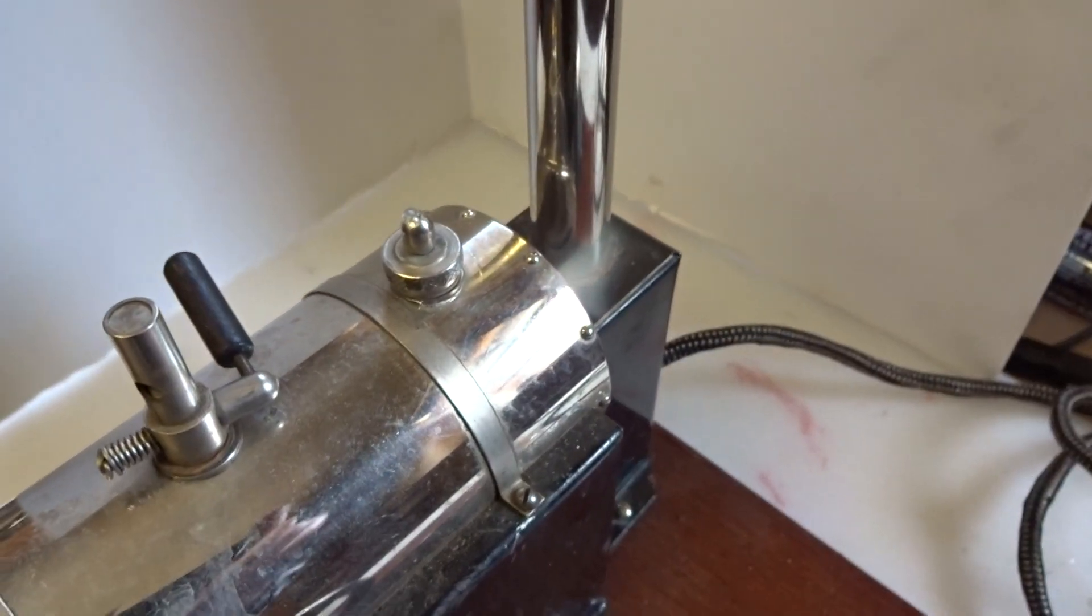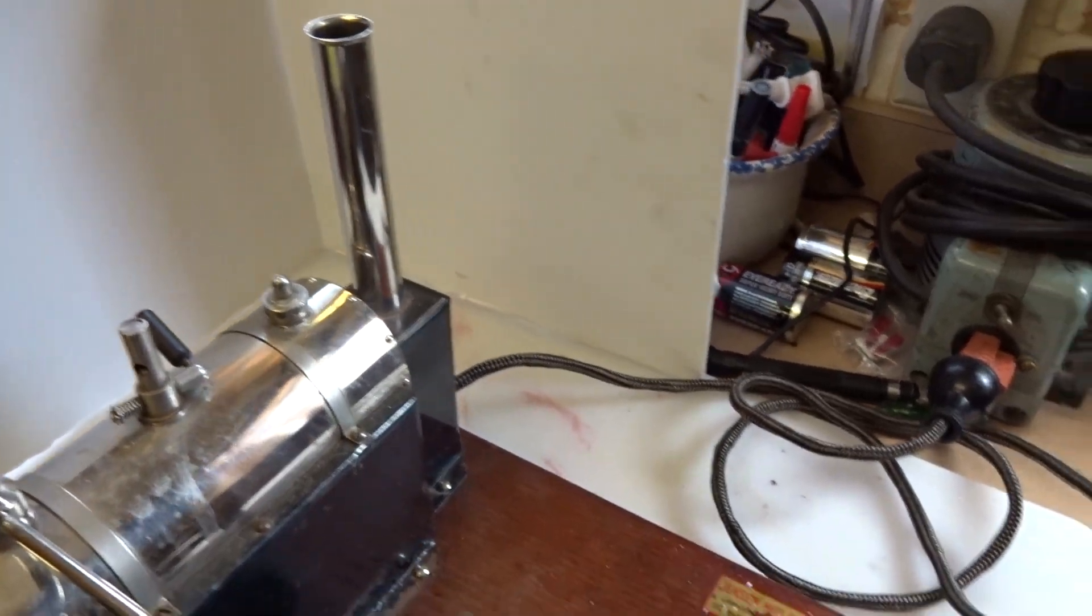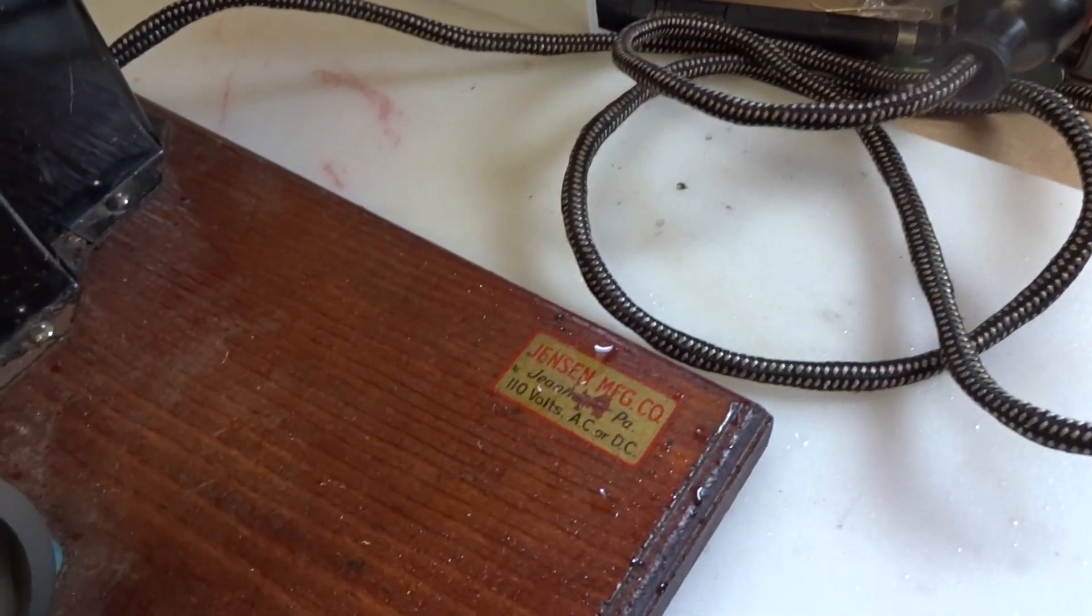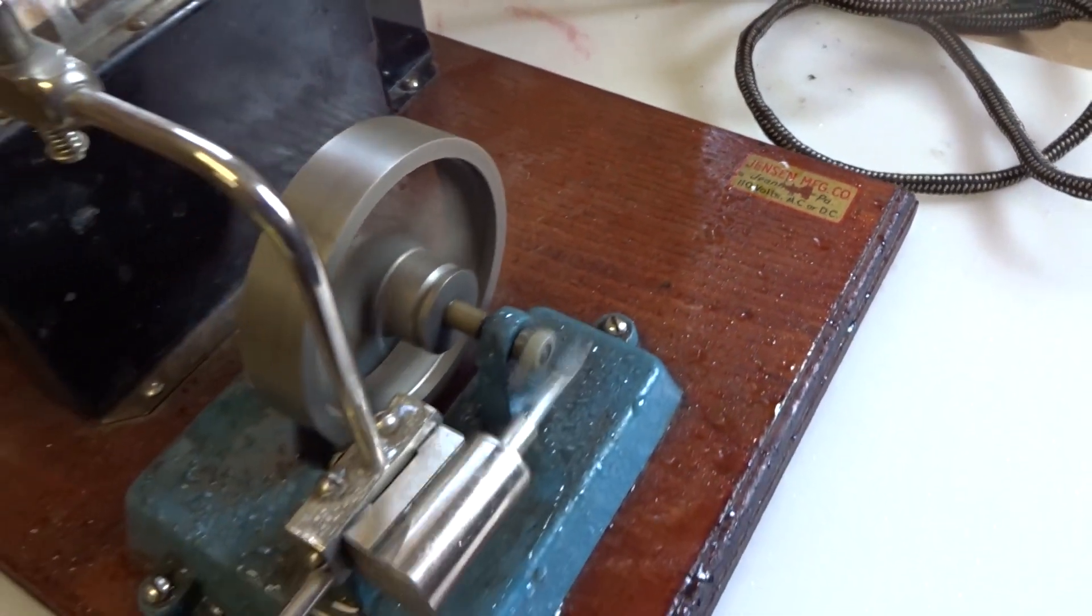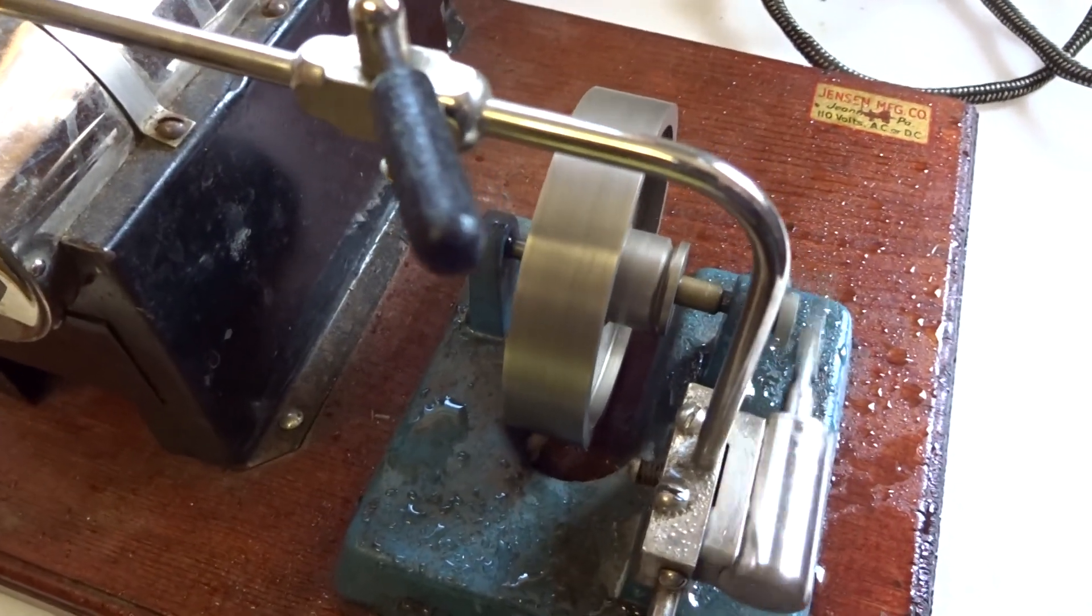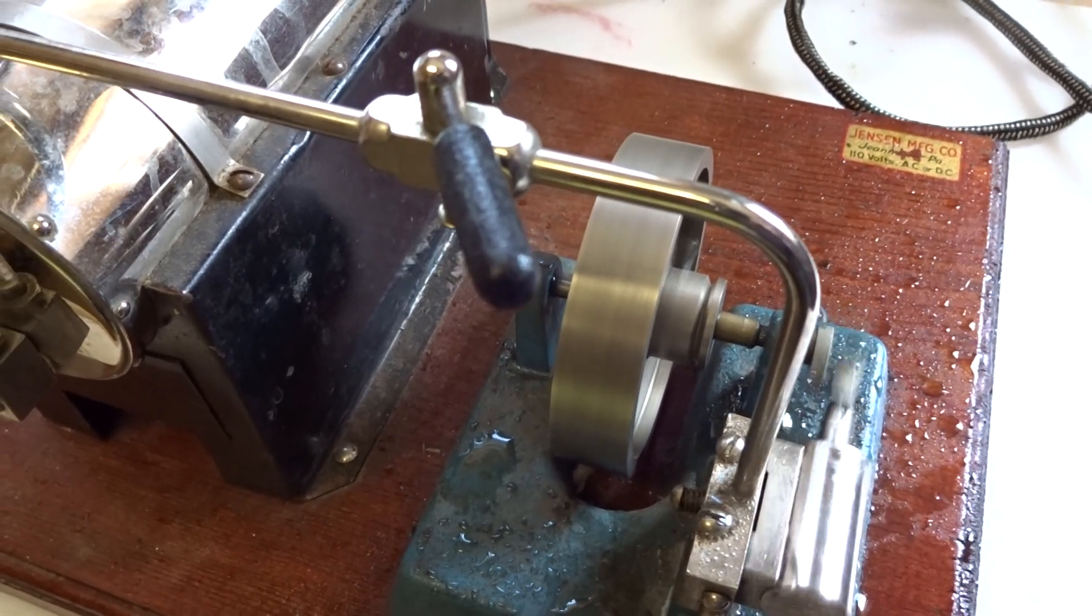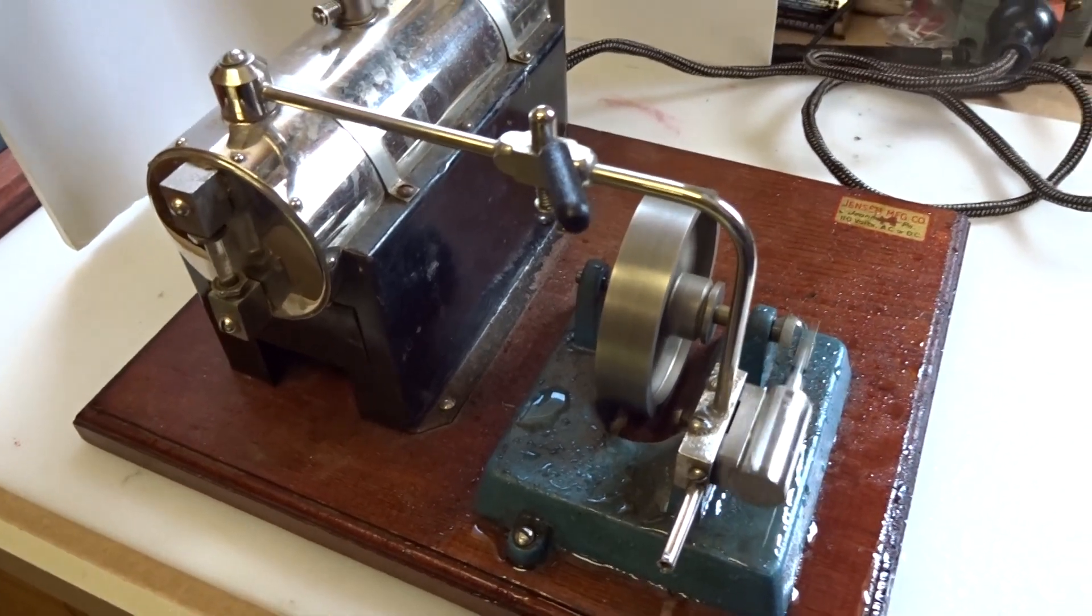It has the original early-style safety valve, chrome-plated smokestack, nice original cord. The decal is not perfect but still pretty good. It's the curved slot for the cast iron pulley.